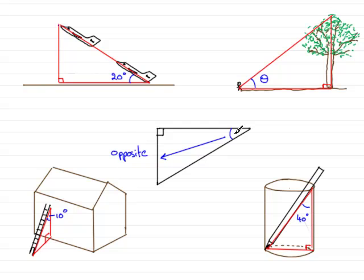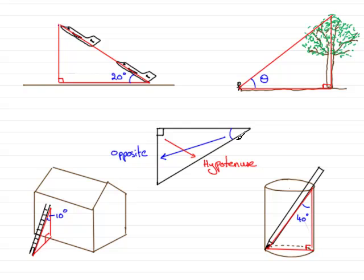If I was using not this angle but this angle here, then this side would be called the opposite side. Now the side that's always opposite the right angle — that would be this side in this particular question — is always called the hypotenuse. I'd like to think that you've already met that word 'hypotenuse' when you were dealing with Pythagoras' theorem. That means we've got one side left in this triangle, and that side is always called the adjacent side.